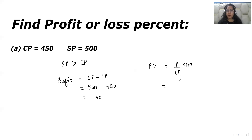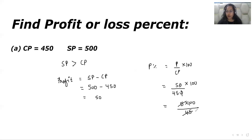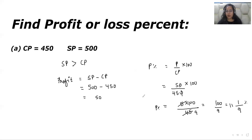As I mentioned, everything depends on our CP. The profit is 50 and our cost price is 450, so we have 50 multiplied by 100 over 450. We can eliminate the zero with zero, leaving 5 multiplied by 100 over 45. In the table of 5, both 5 and 45 are divisible by 5, so we eliminate to get 100 over 9. Writing it in mixed form: 9 times 11 is 99, remainder 1 — that gives us 11 and 1/9 percent. The total profit percentage is 11 and 1/9 percent.